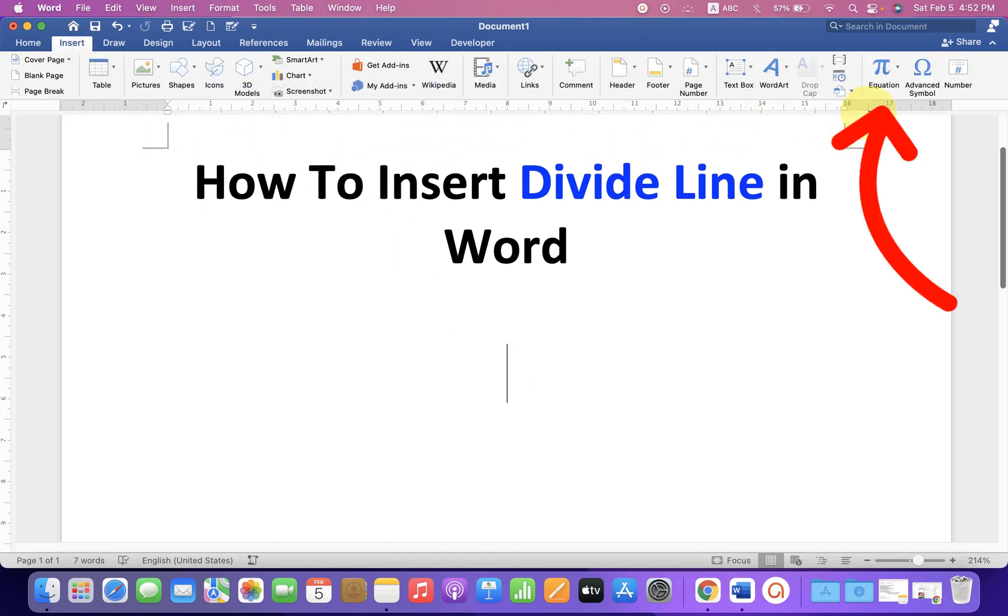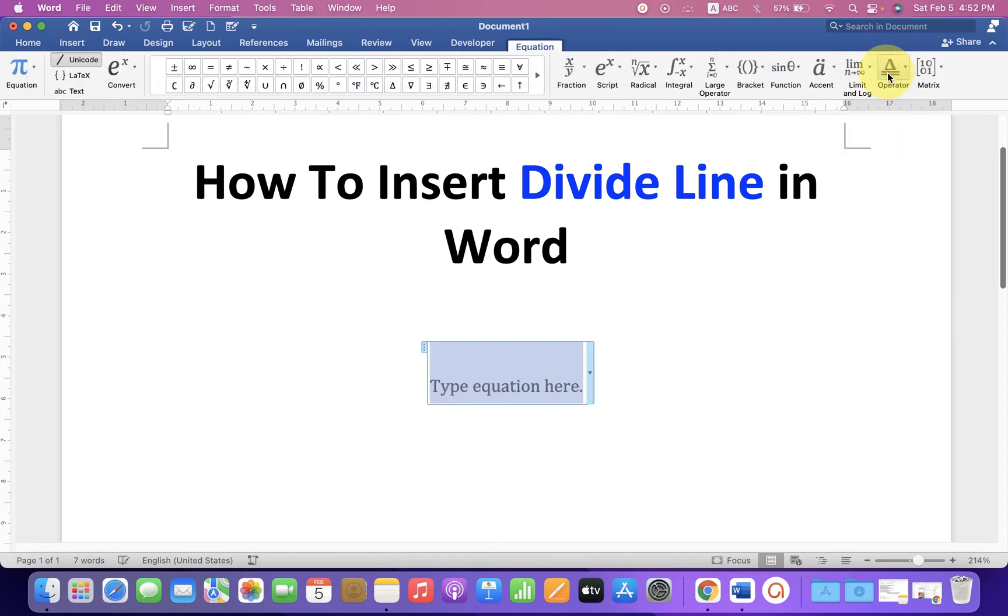At the right-hand side, you will see the Equation option. Just click on this pi symbol to insert this equation box. Now under the equation, you will see the option X divided by Y, which is a fraction.